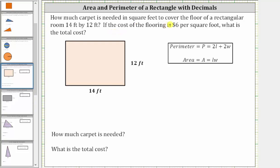How much carpet is needed in square feet to cover the floor of a rectangular room 14 feet by 12 feet? If the cost of the flooring is $6 per square foot, what is the total cost?